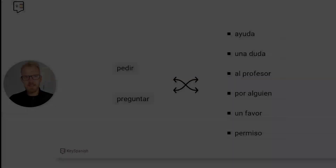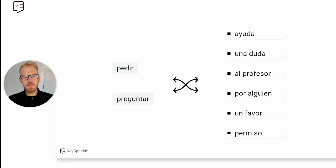But for now, I think this is enough for our first introduction, and let's keep going with more verbs. If you are enjoying the video so far, please give it a like — 'dale a me gusta, es gratis' — it's free. Another pair of confusing verbs: 'pedir' and 'preguntar.'